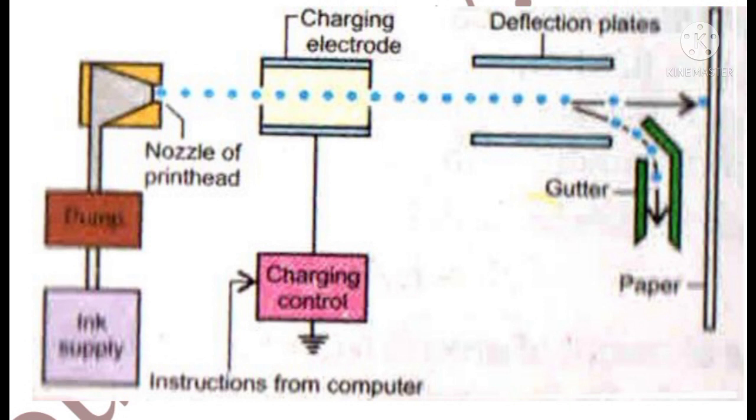During their flight, the droplets pass through two electrical components: the charging electrode and deflecting plates.